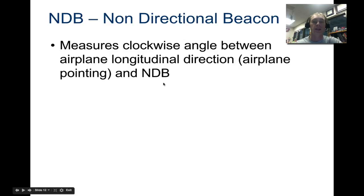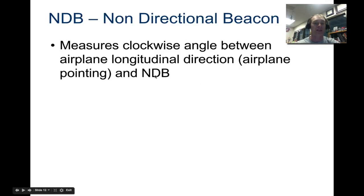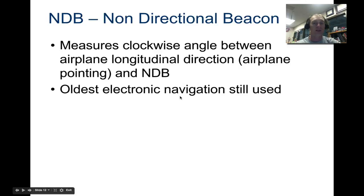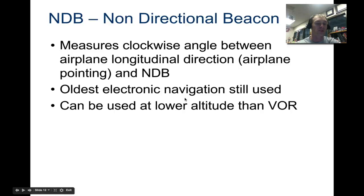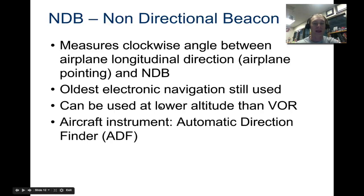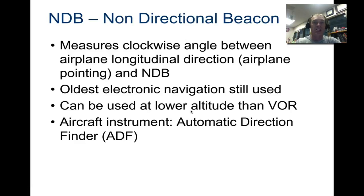The non-directional beacon measures the clockwise angle between the longitude direction and the non-directional beacon relative to the airplane. This is the oldest electronic navigation system still currently being used. It can be used at lower altitudes than VOR, so it still works when flying at very low altitudes. Unlike the instrument landing system, it doesn't give specific directional guidance, but it follows the curvature of the Earth so it can be received at much greater distances.